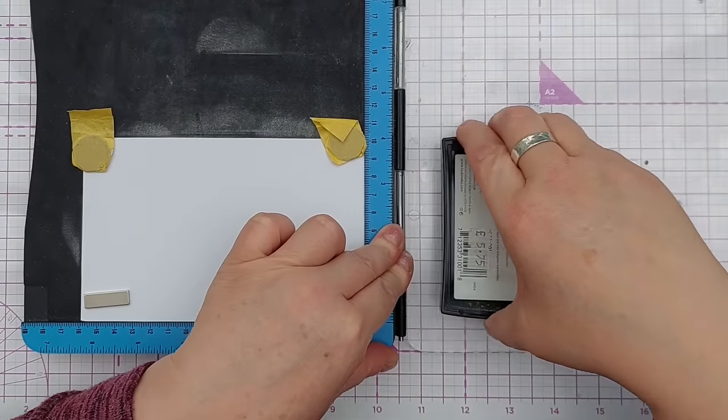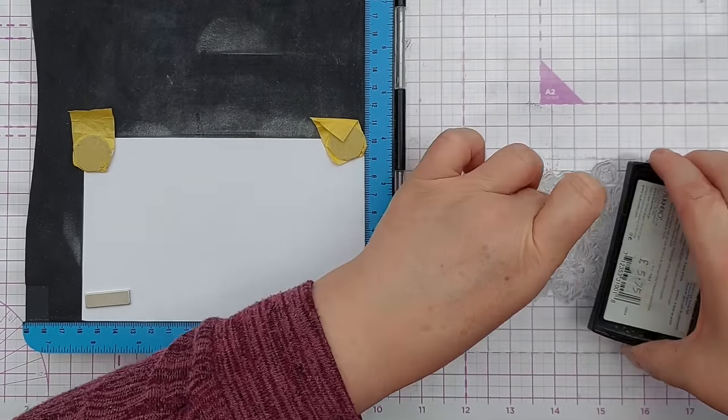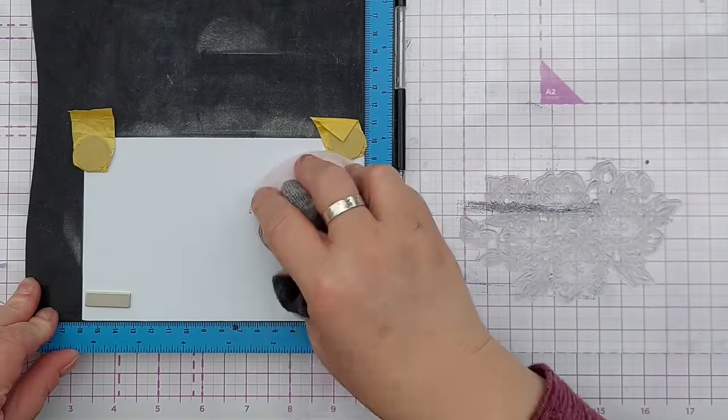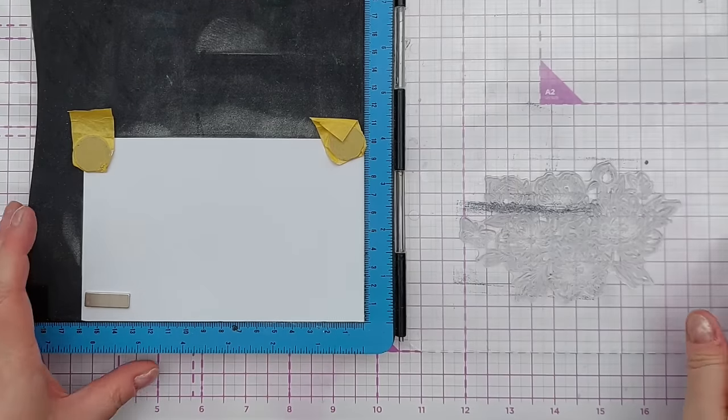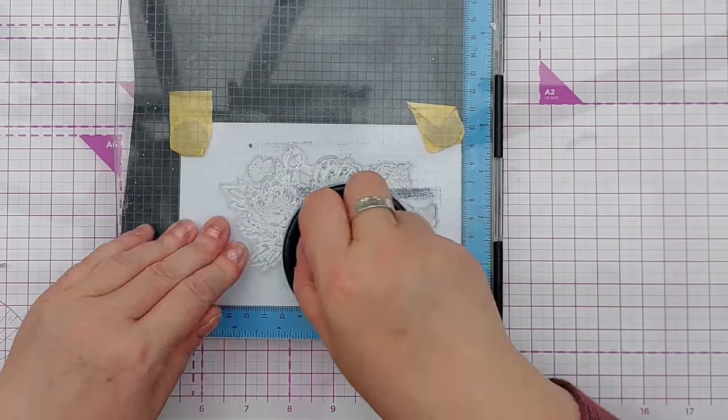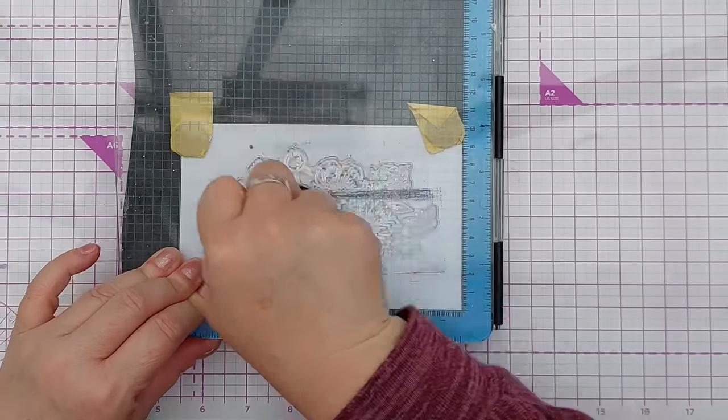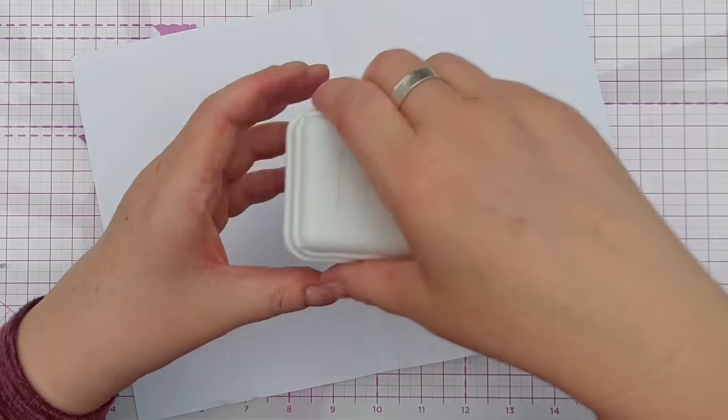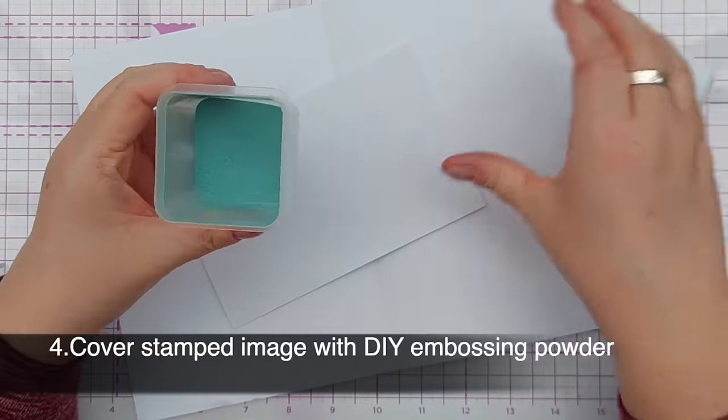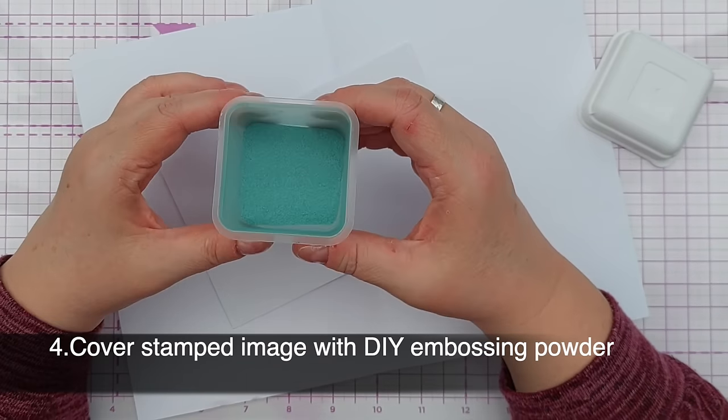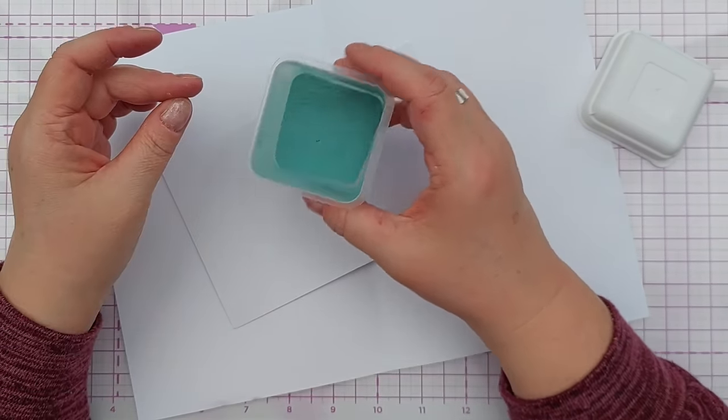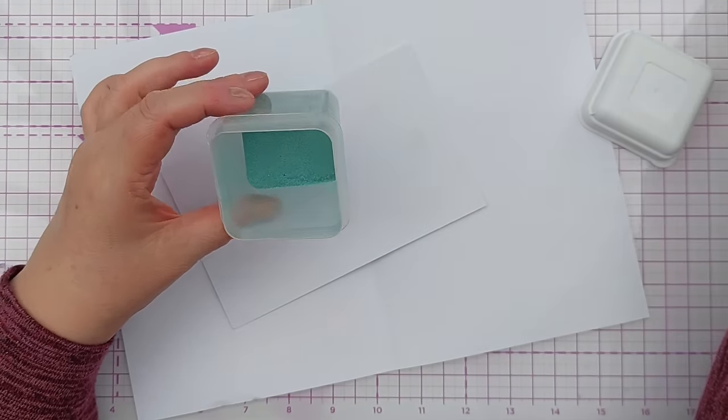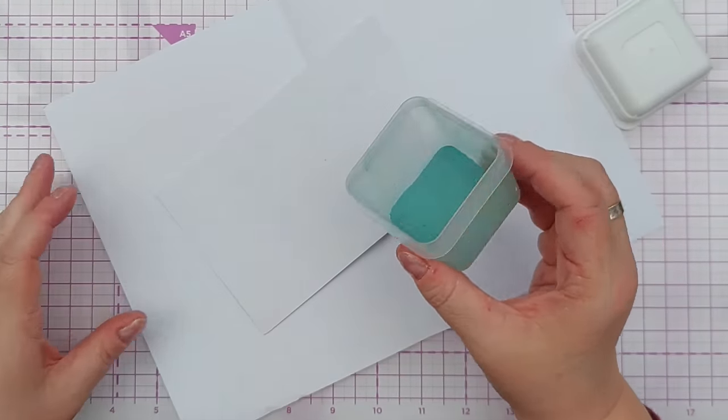So before we put away the heat embossing equipment, I'm going to quickly show you another heat embossing with pigment powders technique. Now this had a whole video of its own earlier in the series. Do check that out if you want more detail, but this is a DIY embossing powder that I made with green Luscious Powder. So I put some clear embossing powder in here and then added a good dollop of green Luscious Powder, and now I've got my own green sparkly embossing powder.